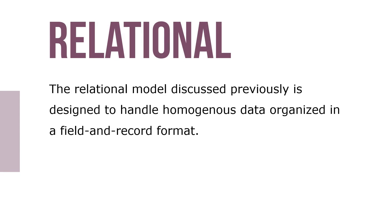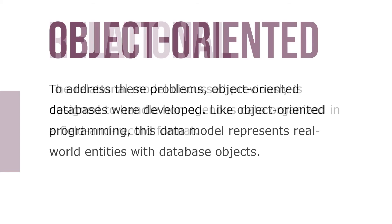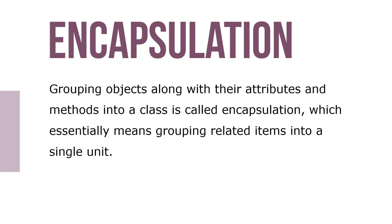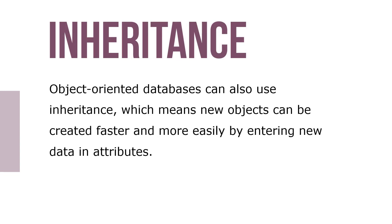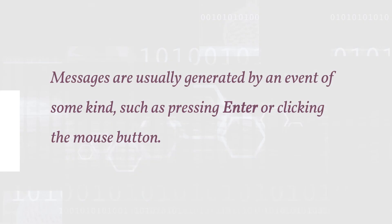The relational model is designed to handle homogeneous data organized in a field and record format. To address its limitations, object-oriented databases were developed. Like object-oriented programming, this data model represents real-world entities with database objects. Grouping objects with their attributes and methods into a class is called encapsulation, which means grouping related items into a single unit. Object-oriented databases can also use inheritance, meaning new objects can be created faster and more easily by entering new data in attributes. Messages are usually generated by an event, such as pressing Enter or clicking a mouse button.